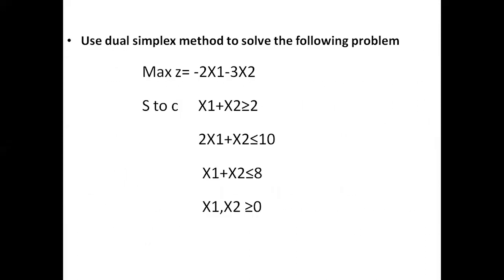Now let's solve a problem. Use the dual simplex method to solve the following problem. The objective function and 3 constraints are given. The objective function is to be maximized, subjected to constraints: first constraint x1 plus x2 greater than or equal to 2, second constraint 2x1 plus x2 less than or equal to 10, third constraint x1 plus x2 less than or equal to 8, and non-negativity constraint x1, x2 greater than or equal to 0.